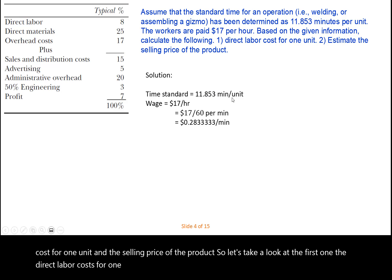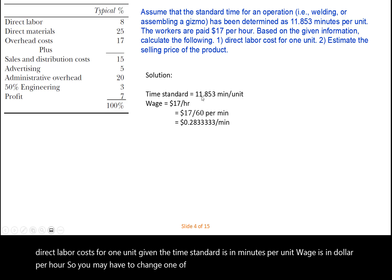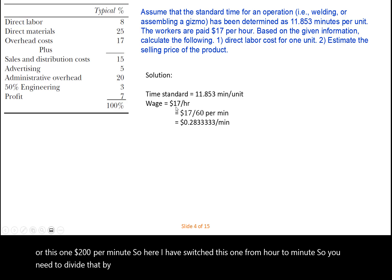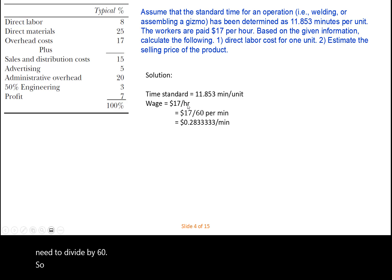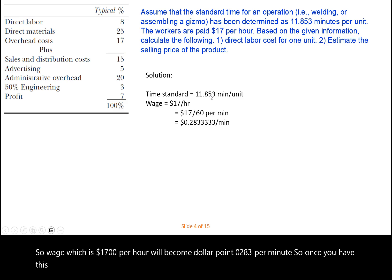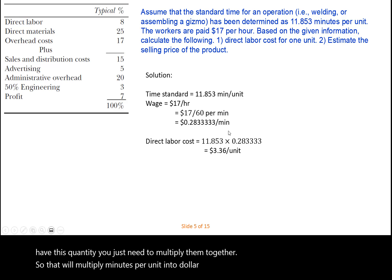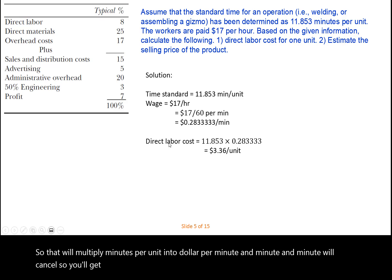The time standard is in minutes per unit and wages are in dollars per hour, so you need to convert one of them. Here I have converted the wage from per hour to per minute by dividing by 60, so $17 per hour becomes $0.283 per minute. Once you have this, multiply minutes per unit by dollars per minute — the minutes cancel — and you get dollars per unit. That's how you estimate the direct labor cost per unit.